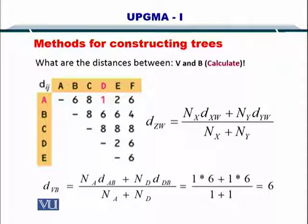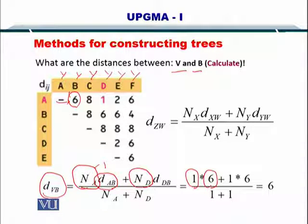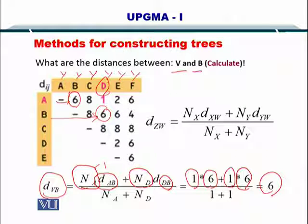To compute the distance between V and B, the distance between V and B would be: number of sequences in A — so obviously there was only one sequence in each one of these when we started — so 1, and the distance between A and B is 6. So 1 times 6, plus number of sequences in D which is 1, and the distance between D and B is also 6. So the answer is 6. The distance between V and B is 6.